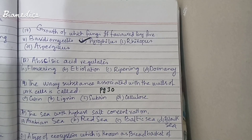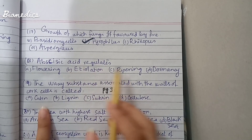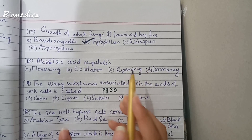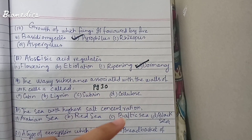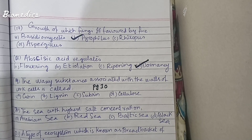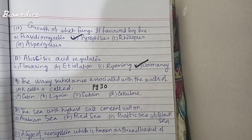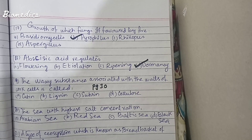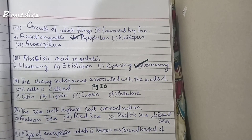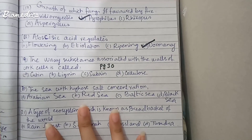Abscisic acid (ABA) is a growth inhibitor hormone that regulates seed and bud dormancy. It is released under drought and winter conditions. During drought, ABA prevents water loss by closing stomata. Other hormones like auxins and gibberellins promote growth. The answer for what abscisic acid regulates is dormancy.